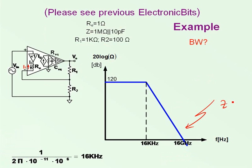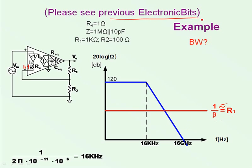Next stage is to plot one over beta. As it turns out, for a current feedback amplifier, one over beta equals two R1. Those who are unfamiliar with this, please go back and look at the previous ElectronicBits. It's explained there.